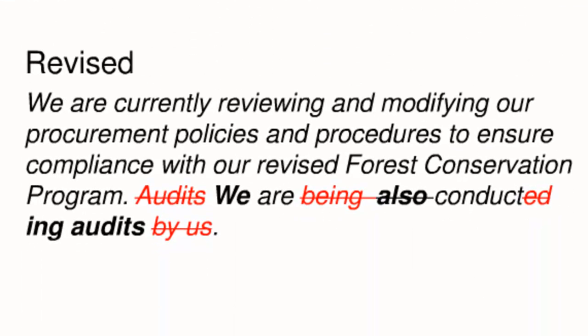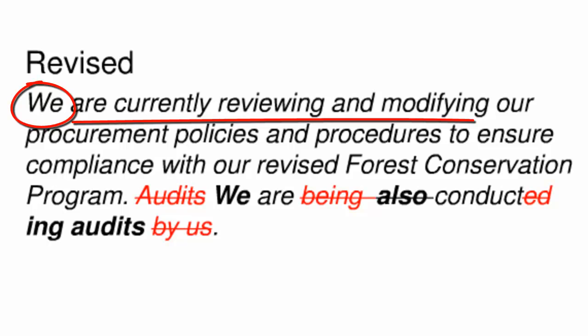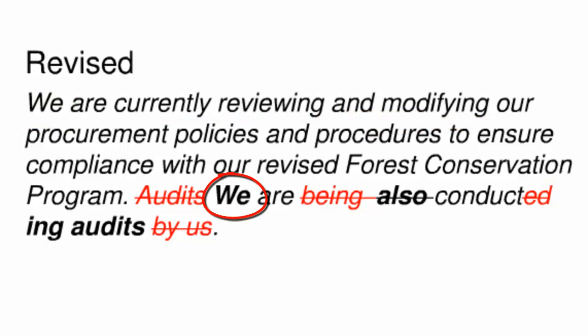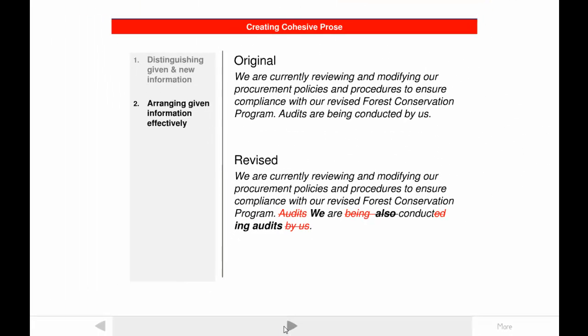Now look at the revised passage. Here 'we' is used as given information in the subject slot of the second sentence. This arrangement — given information to new information to given information — creates cohesion. It bears repeating that if readers care enough, they'll work as hard as they need to get the message no matter how your information is arranged. But they will develop a negative stereotype about you. Of course, if readers don't care enough, they simply won't put forth the effort. In both cases, the writer's message is inefficient. In the second case, it's ineffective as well.